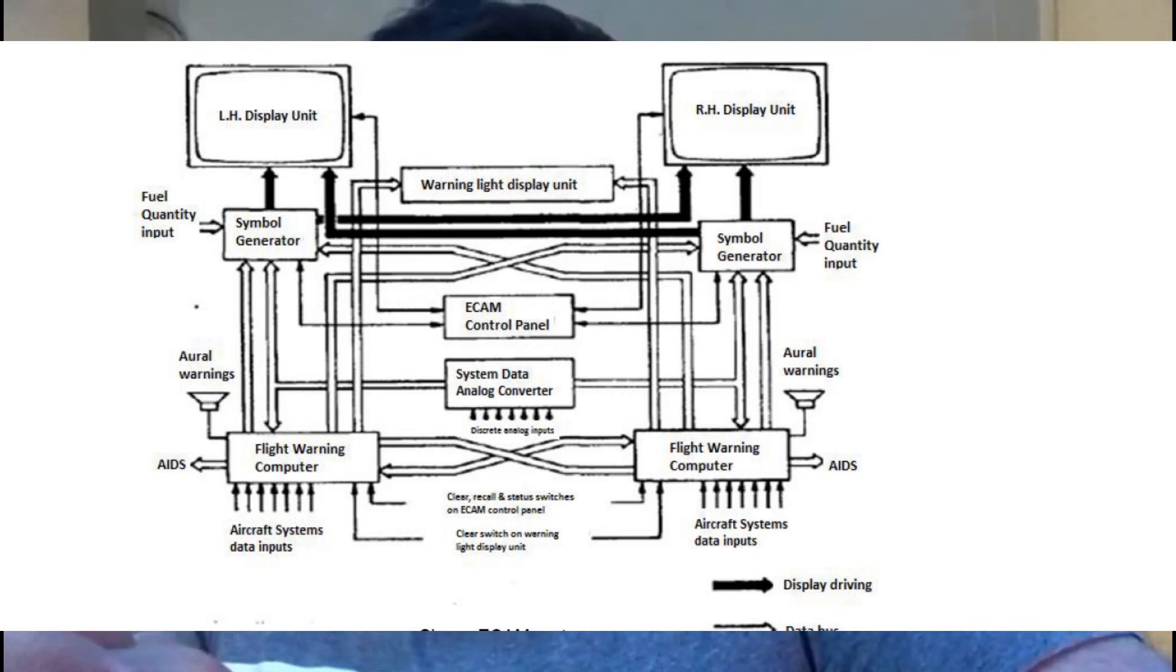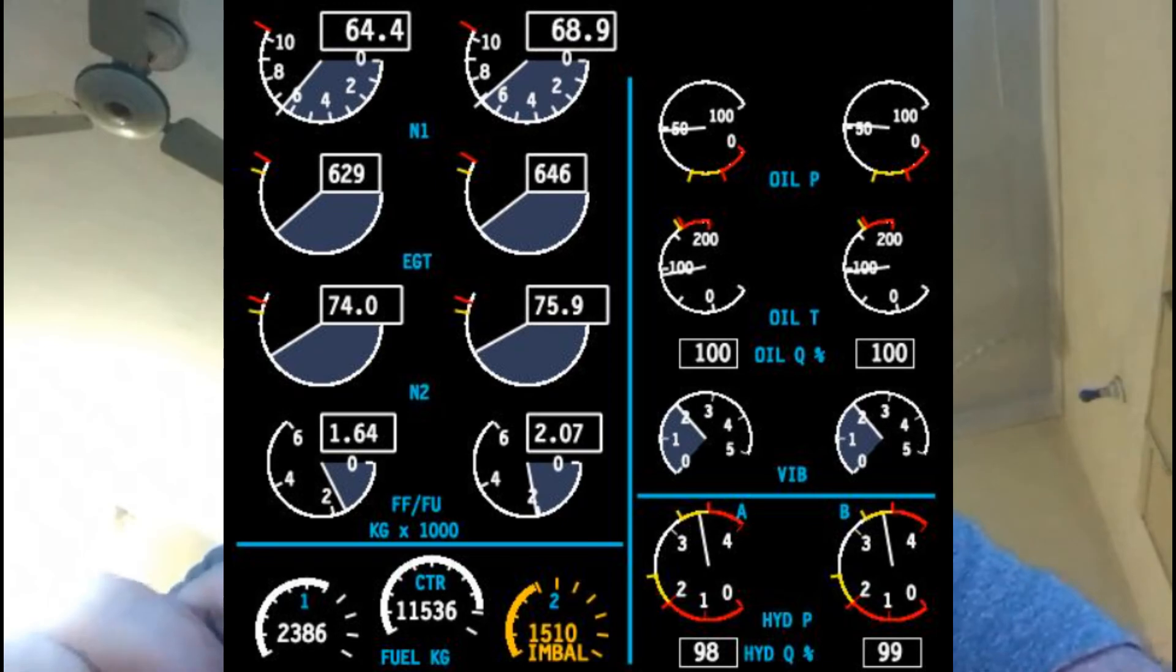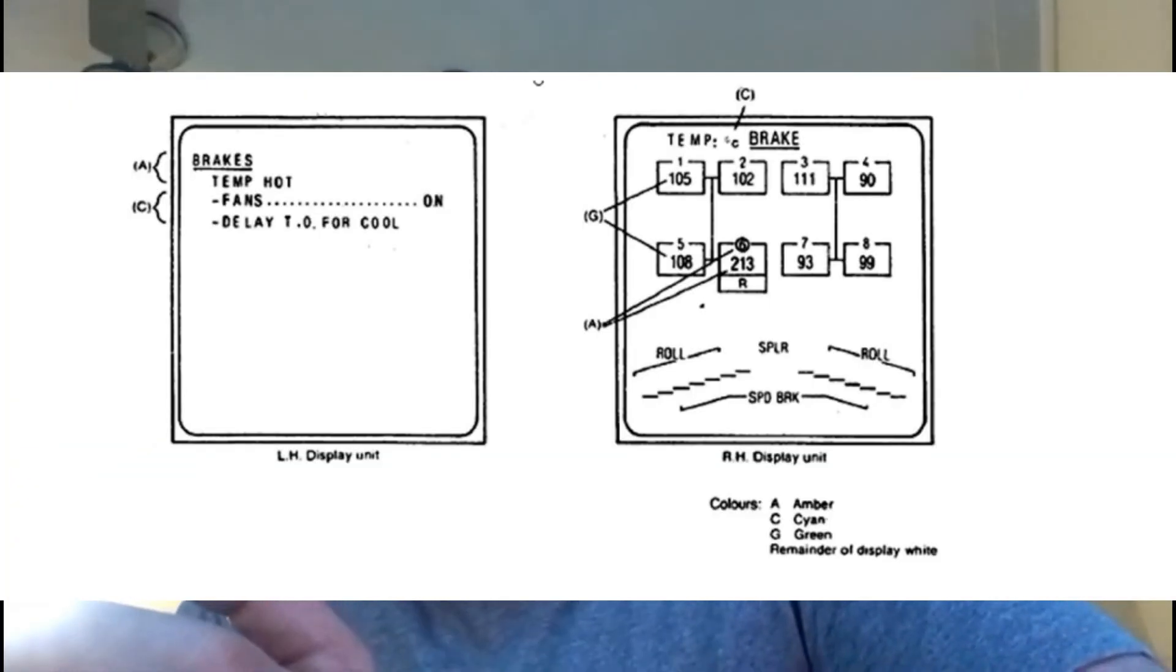Now it's the last one we'll be discussing, which is ECAM - Electronic Centralized Aircraft Monitoring. The ECAM system comprises the units shown. As far as display format is concerned, it differs significantly from EICAS in that it excludes analog presentation of engine parameters and adopts the principle of monitoring display units side by side, so that the left-hand unit is dedicated to information on system status, warnings, and corrective action in a sequence checklist format, while the right-hand unit is dedicated to associated information in diagrammatic format.